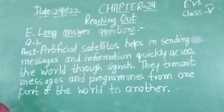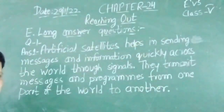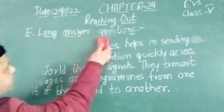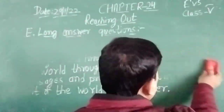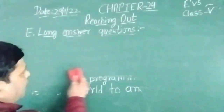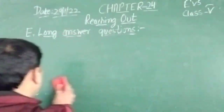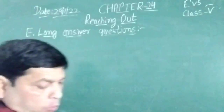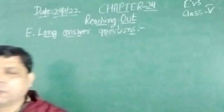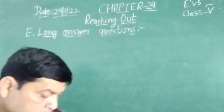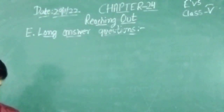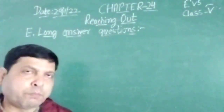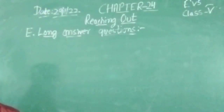Next question: write about the early means of communication. You can take a screenshot. So, what are the early means of communication? In ancient times, how did people communicate with each other? They communicated through sign language, drumbeats, pigeons, messengers, or smoke signals.